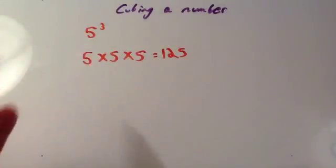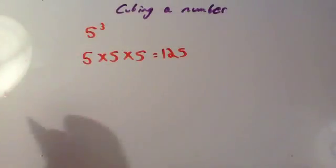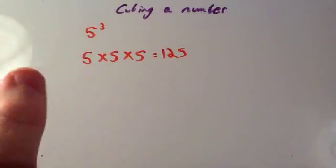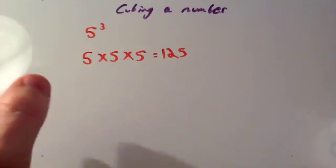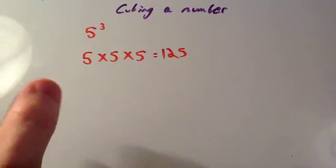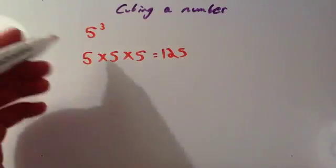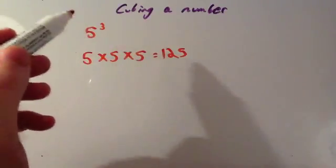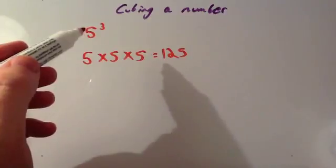I know that one off by heart. And if you watch the video on cube numbers, I'll tell you the ones that you should learn off by heart. But to cube a number, you multiply it by itself and by itself again.